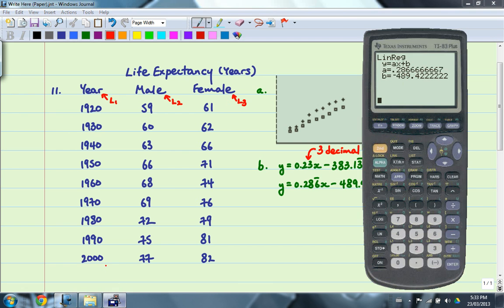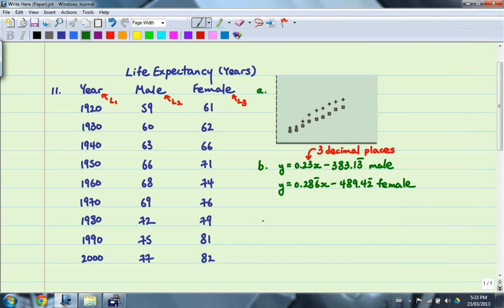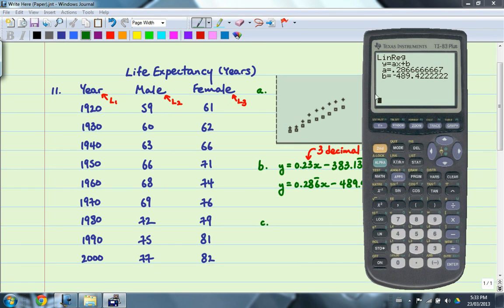So on to part C, in which we want to graph the two lines in order to find out what the life expectancy will be in the year 2012. So I'm going to go ahead and recalculate the male life expectancy first. So L1, L2. And then I'm going to go to Y equals. And I'm going to go ahead and graph this line. Now how I'm going to do that is I'm going to go VARS, go to number five statistics.